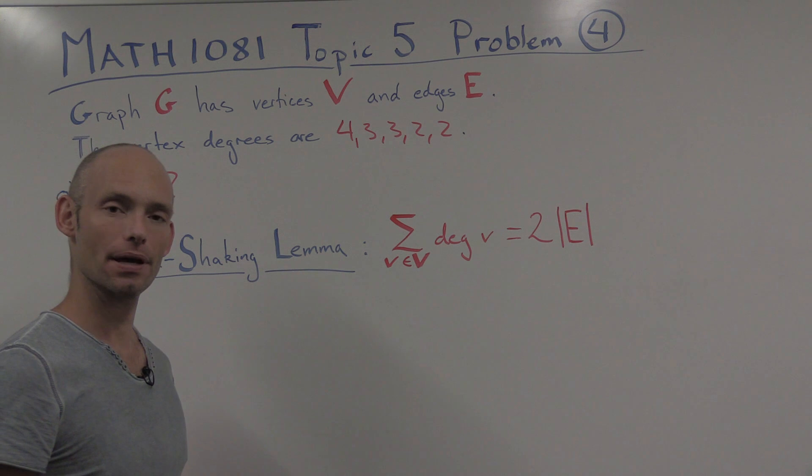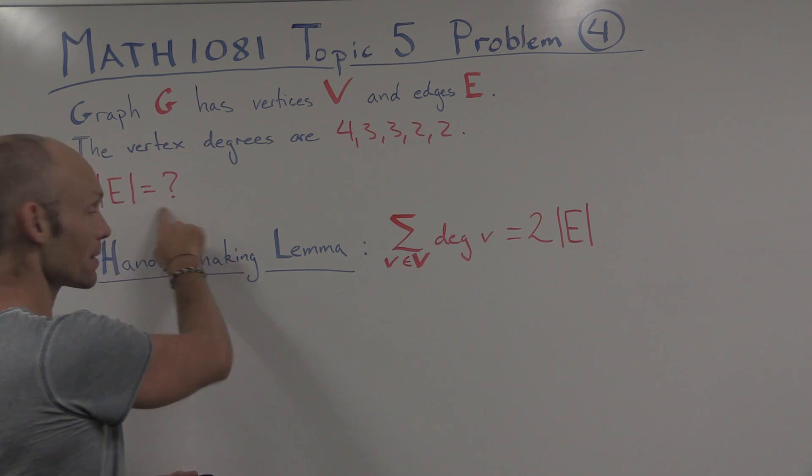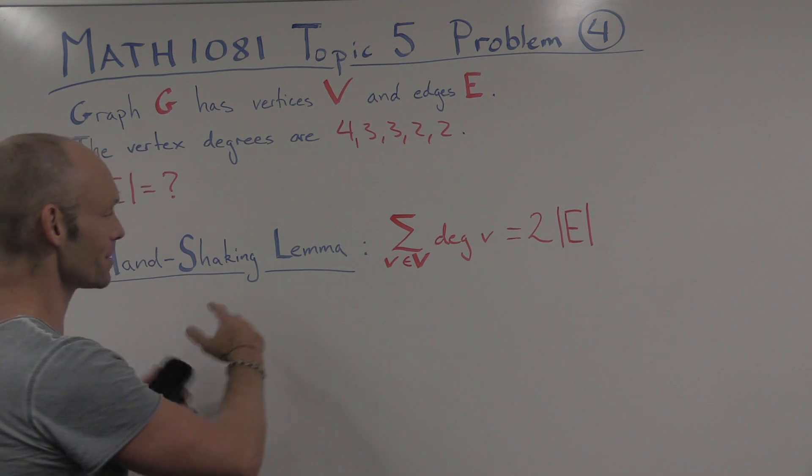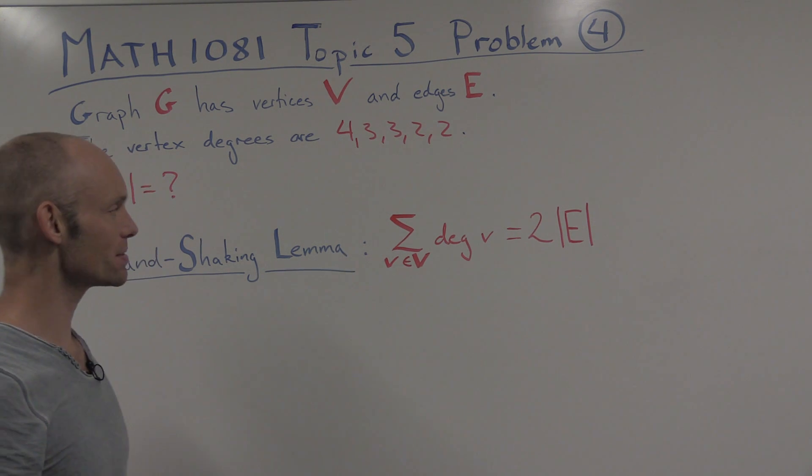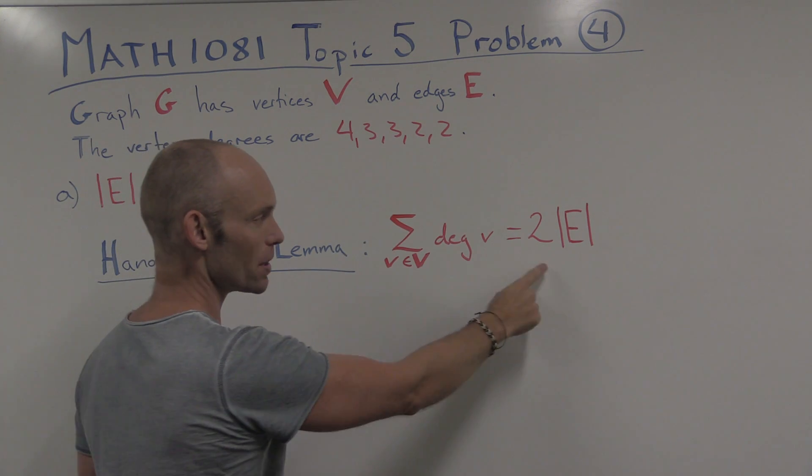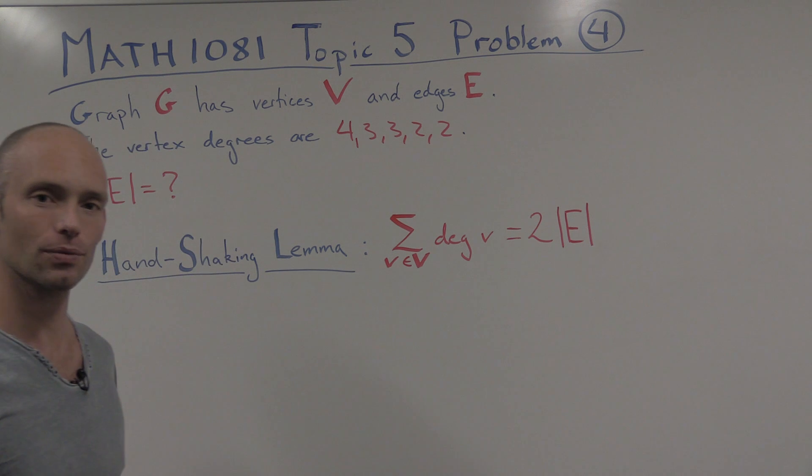Now, to solve this problem, to work out the number of edges in this graph, we can use the handshaking lemma. And here it is. So it says that if we add up all of the degrees here, then we get twice the number of edges in the graph.